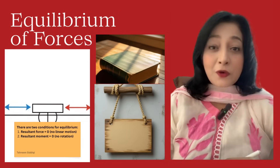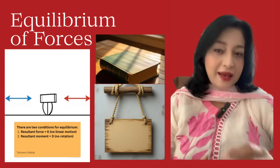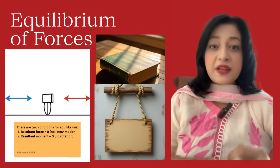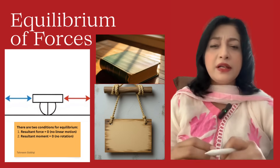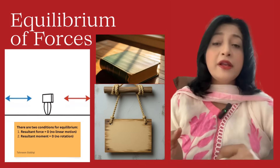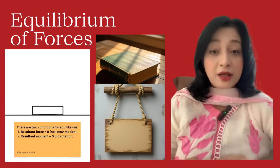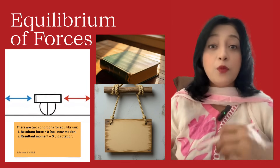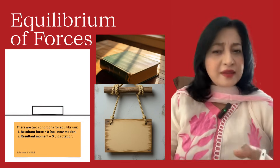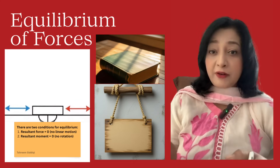Now, equilibrium means balance. An object is said to be in equilibrium when the net force and net moment acting on it are zero. There are two conditions for equilibrium: number one, when resultant force equals zero — no linear motion; number two, when resultant moment equals zero — no rotation. For example, a book resting on a table: weight is balanced by the normal reaction.